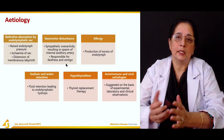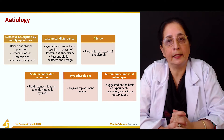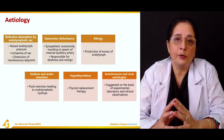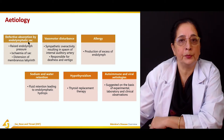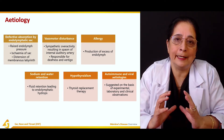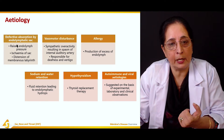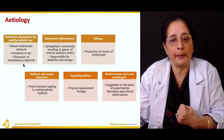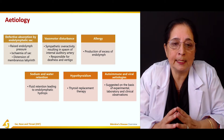What are the different causes of Meniere's disease? Different factors can lead to increased production of endolymph and increased pressure in the cochlear duct. One cause is defective absorption by the endolymphatic sac — if there is defective absorption, it leads to increased endolymph, increased endolymph pressure, ischemia of the sac, and distension of the membranous labyrinth.